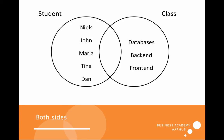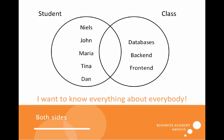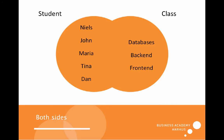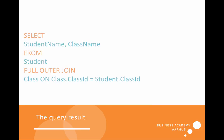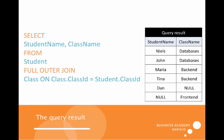What if we want to know everything about everybody and every class? Then we have to use the FULL OUTER JOIN. The full outer join works like the others, except instead of left or right, we take everything into consideration, using the same columns, tables, and join expression. The result shows the four students who are in a class, then Dan who has no class, and then frontend which has no students.